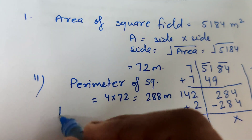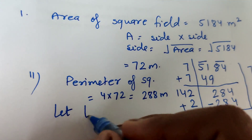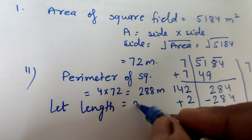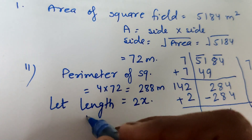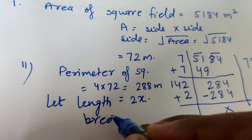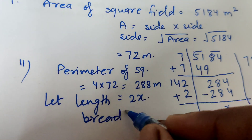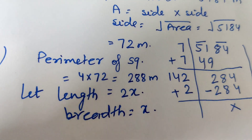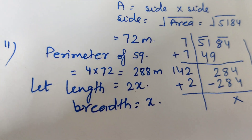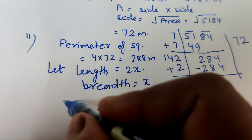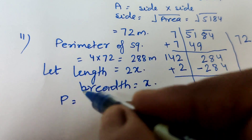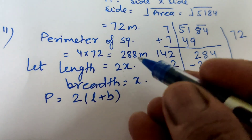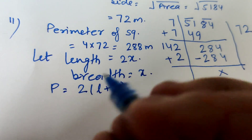Let the length of the rectangular field be 2x and the breadth be x, because the length is double the breadth. Now, the perimeter of the rectangle is 2 × (L + B), which is also equal to 288 meters since the perimeters are the same.